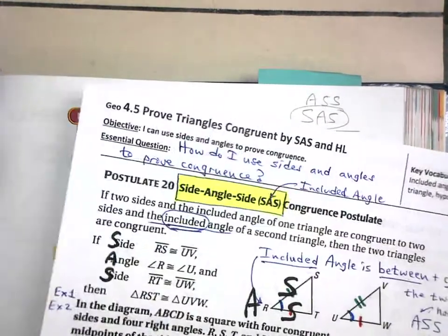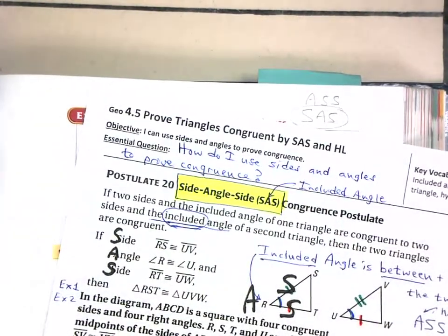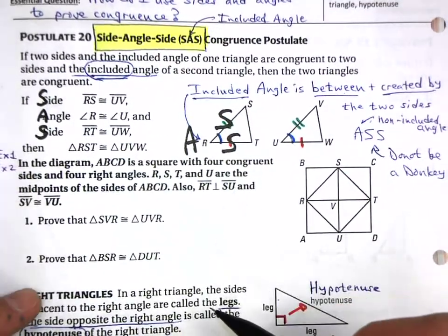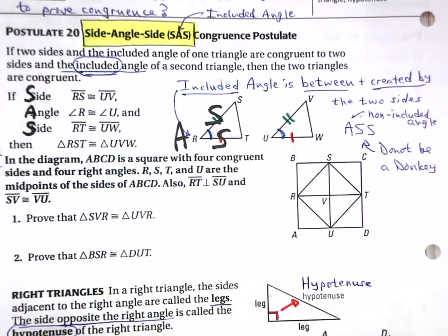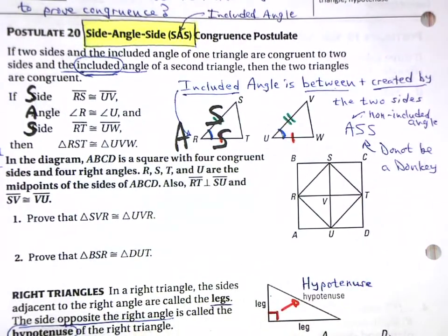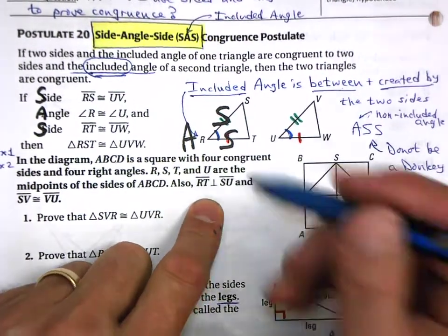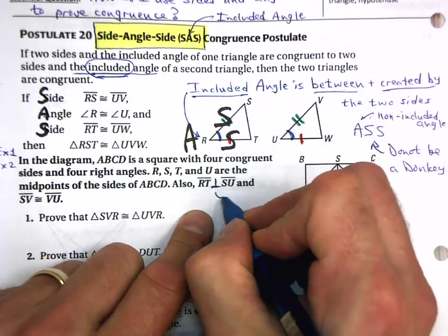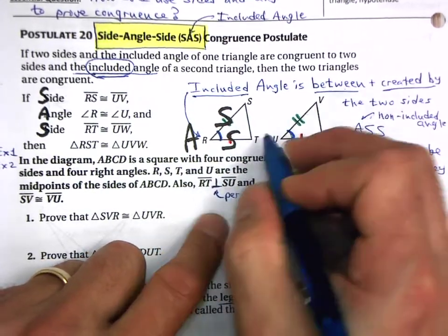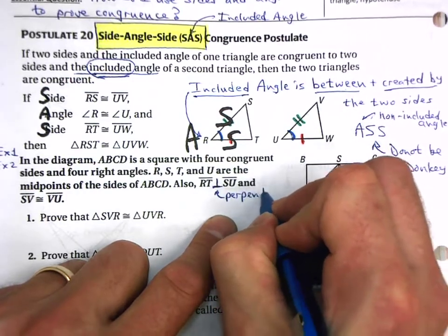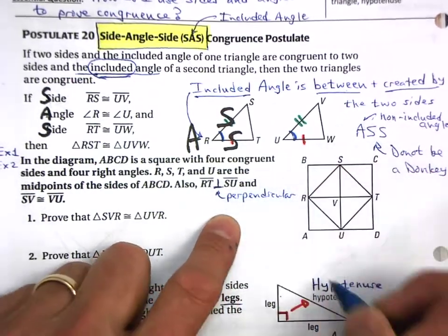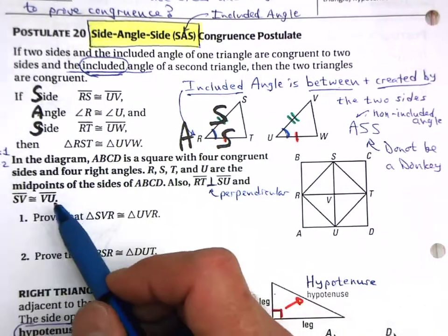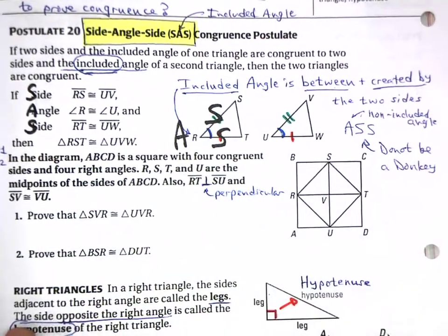Go ahead and pause the video and do these two problems on your own. Let me just remind you: what is this upside-down T? What does that mean? It means perpendicular. Sometimes you get snagged on that. So that's perpendicular, and of course you know that tick marks indicate congruence. You should be able to figure this out on your own.